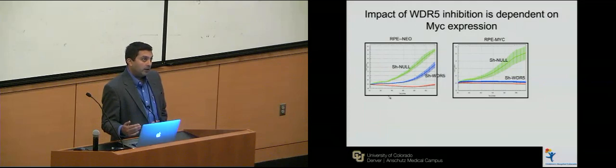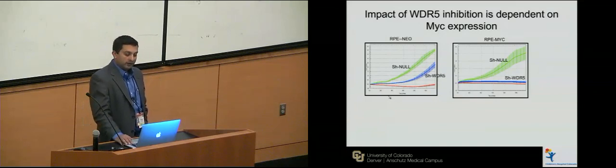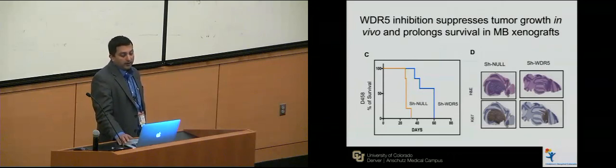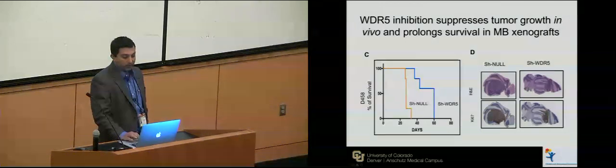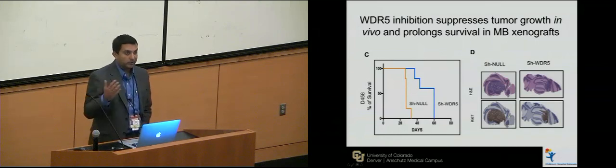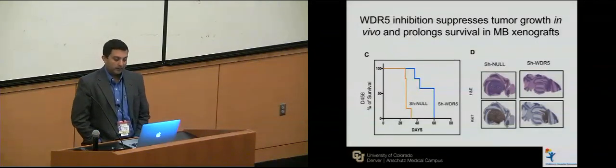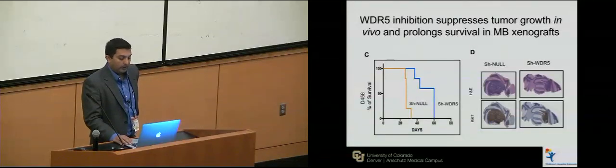In vivo, when we knock down WDR5 and grow tumors in mouse cerebellum, the knockdown of WDR5 does prolong survival over time. With the null shRNA you get large tumors labeled with Ki67, a marker of proliferation. With WDR5 knockdown, you get much smaller tumors and animals live longer in the xenografts — showing in vivo that knocking down WDR5 might be a therapeutic approach for MYC-driven medulloblastoma.